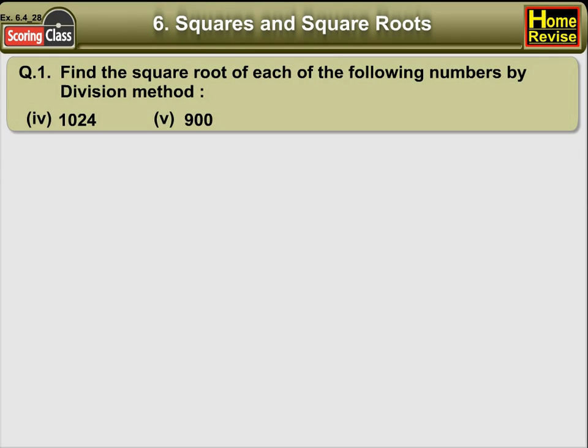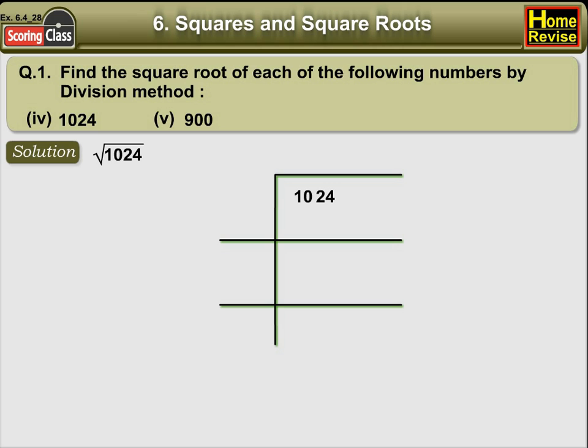Question 1. Find the square root of each of the following numbers by division method. For 1024, starting from the unit's place, let us take two digits together and put them under bars.